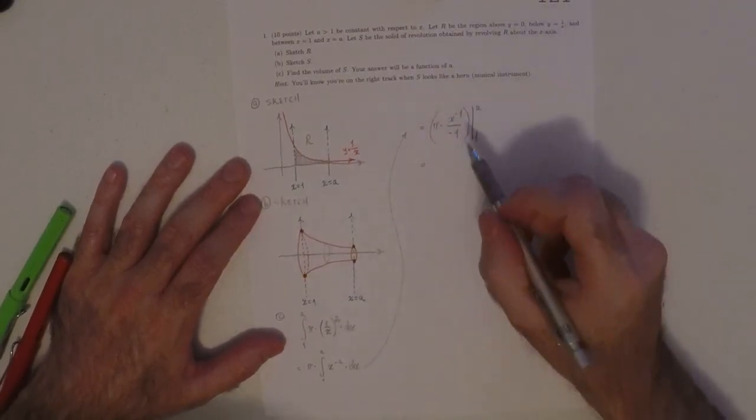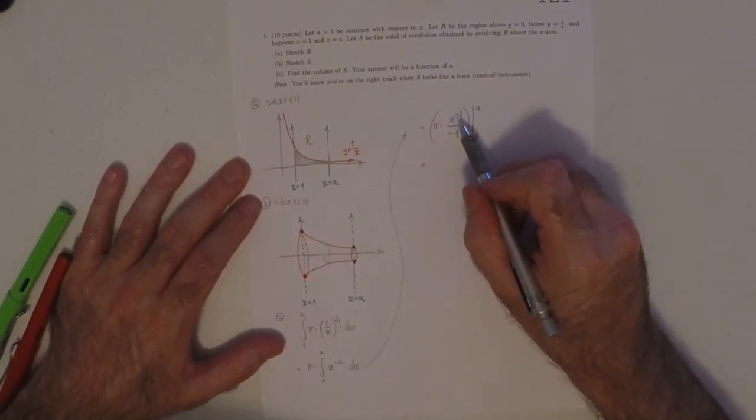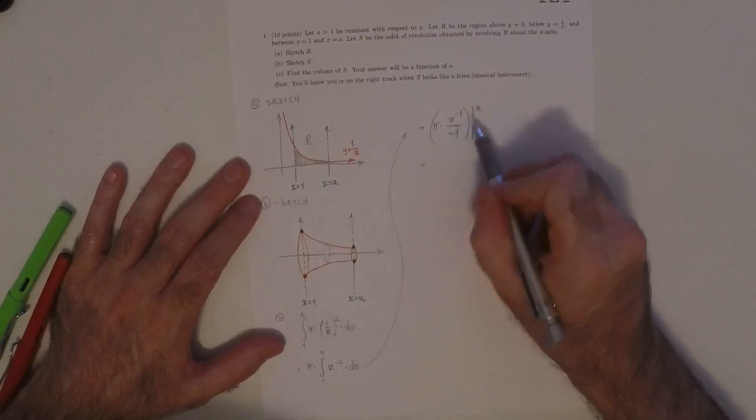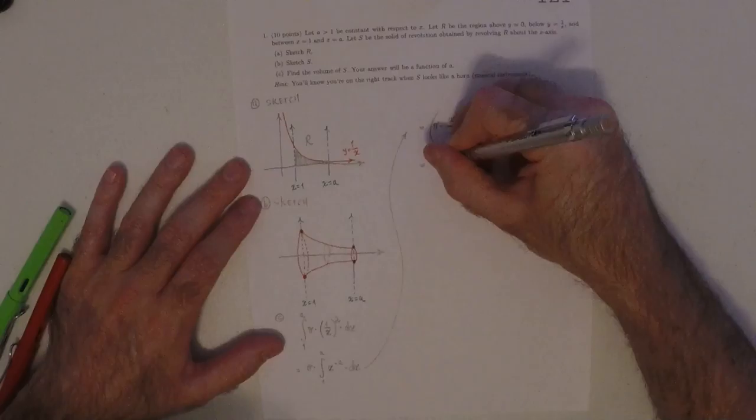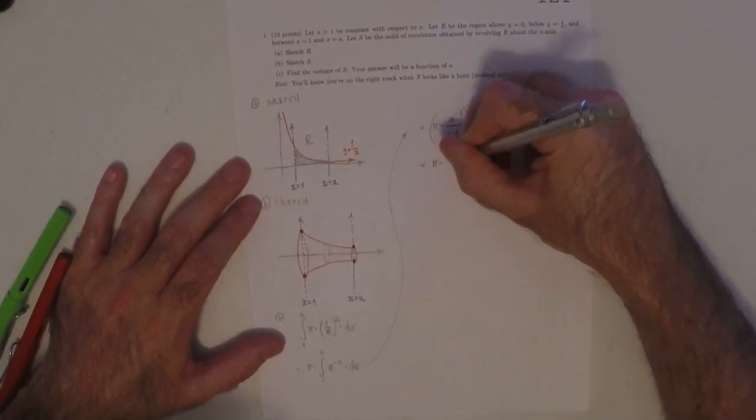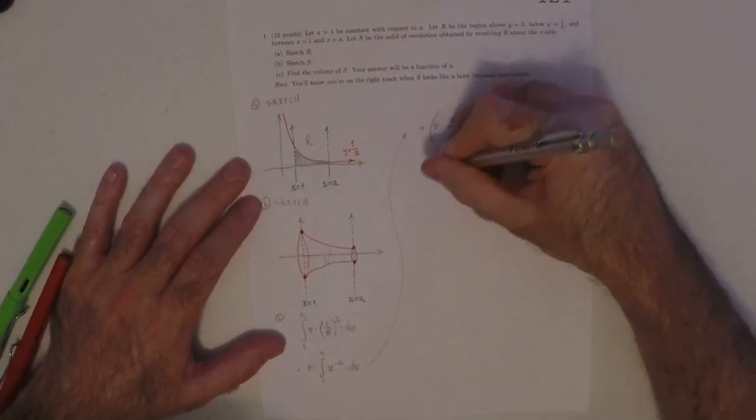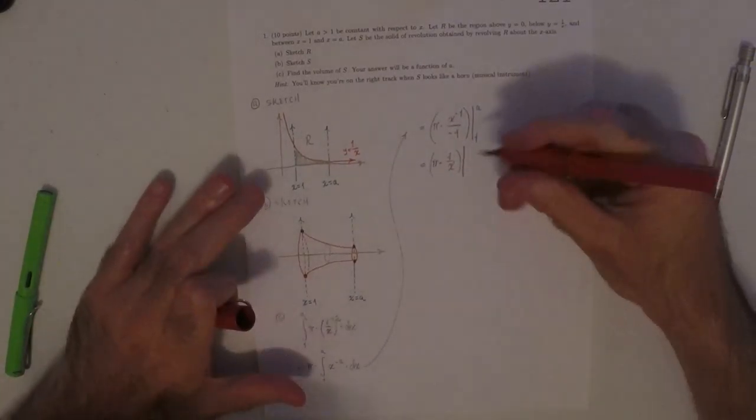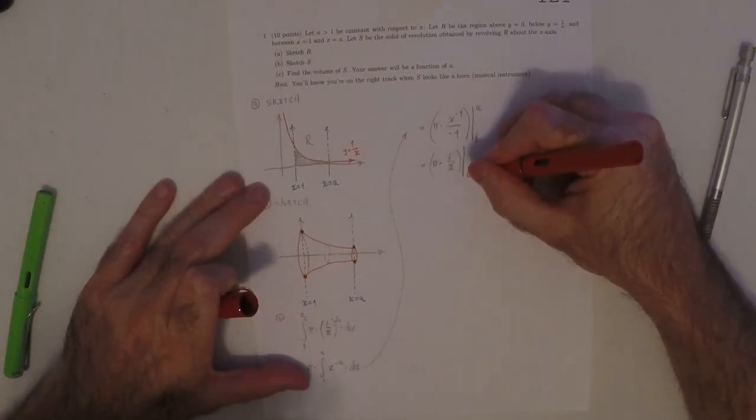So then I'll simplify this just a little bit. I'll write x to negative 1 as 1 over x, and I'll use this negative to swap the order of evaluation. So pi multiplied by 1 over x, and then put A to 1.